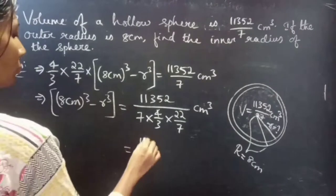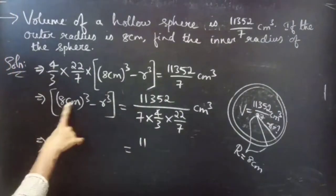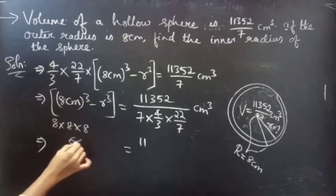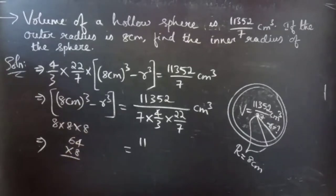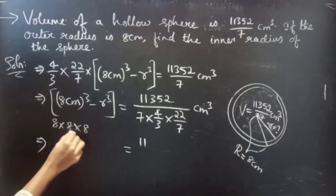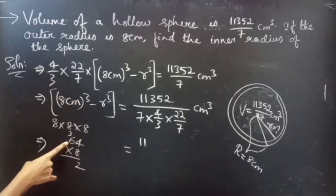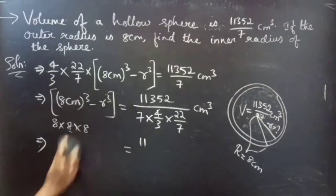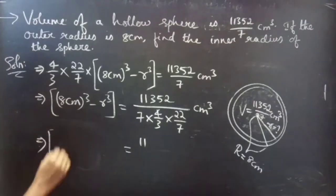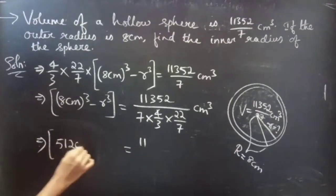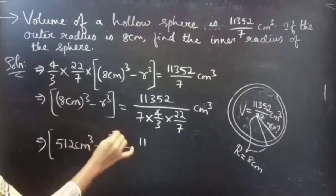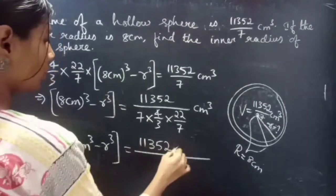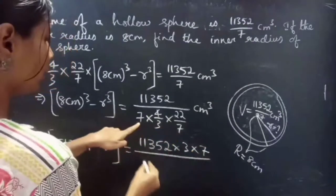Computing 8 cubed: 8 times 8 is 64, 64 times 8 is 512. So we have 512 centimeter cube minus r³ equals 11352 times 3 times 7 divided by (7 times 4 times 22) centimeter cube. The 7s cancel, giving 11352 times 3 divided by (4 times 22) centimeter cube.